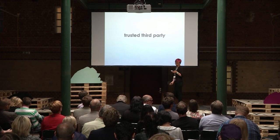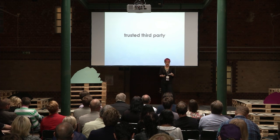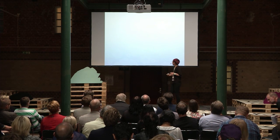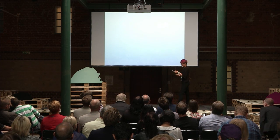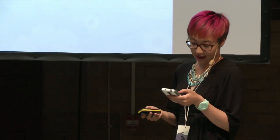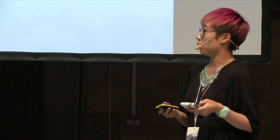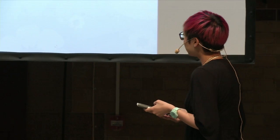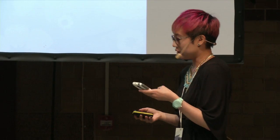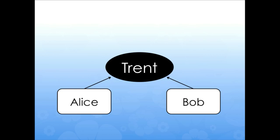So there's this thing in cryptography called a trusted third party. The setup is generally something like Alice and Bob want to securely communicate, but they can only do it through Trent, a trusted third party.